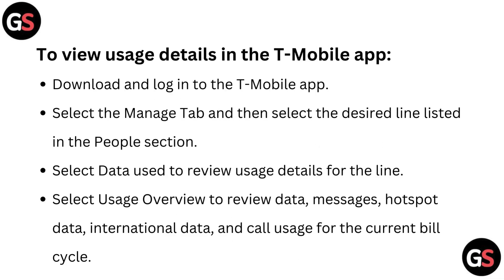To view usage details in the T-Mobile app, download and log in to the T-Mobile app. Select the message tab, then select the desired line listed in the people section. Select data use to review usage details for the line. Select usage overview to review data, messages, hotspot data, international data, and call usage for the current bill cycle.